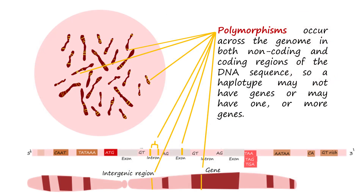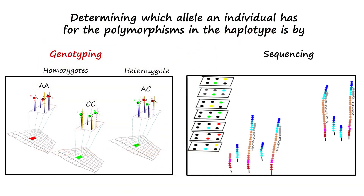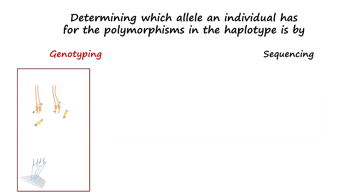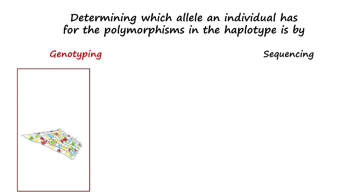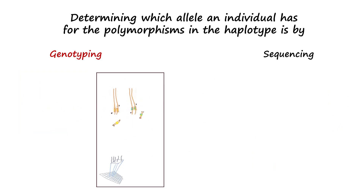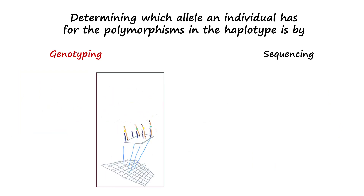As nucleotide differences occur in both non-coding and coding regions of the DNA sequence, a haplotype may not have genes or may have one or more genes. Generally, determining which allele an individual has for the polymorphisms in the haplotype is by genotyping — that is, defining the nucleotides at the positions known to have variations between individuals.